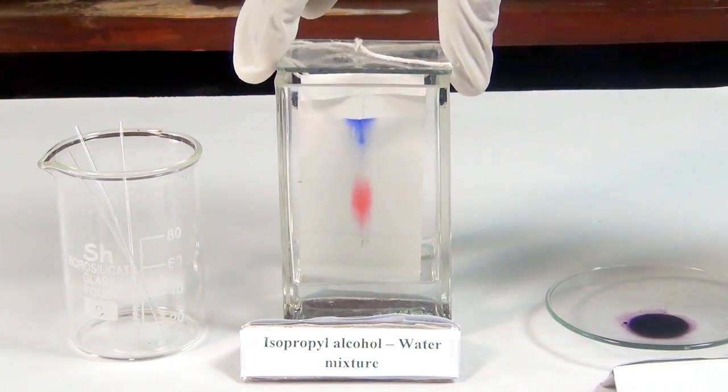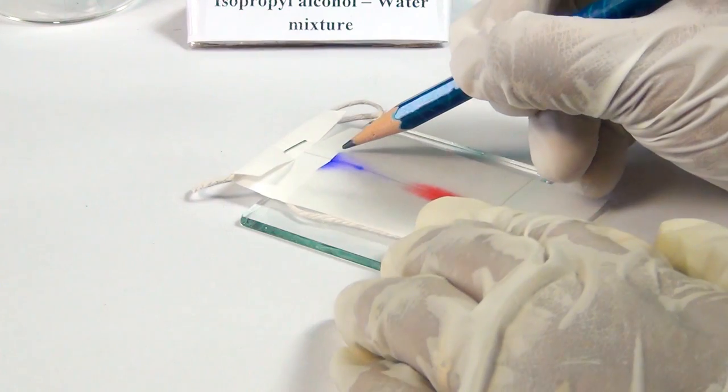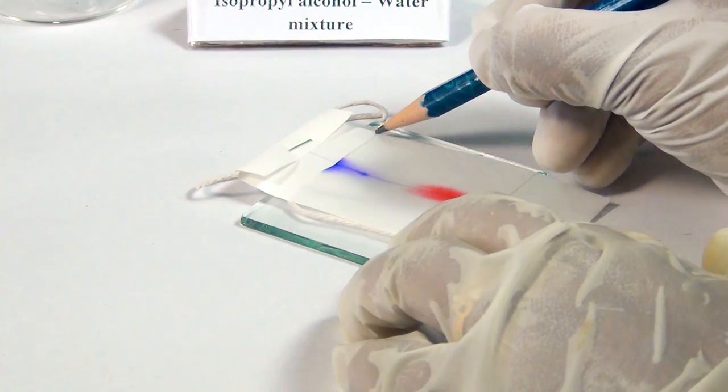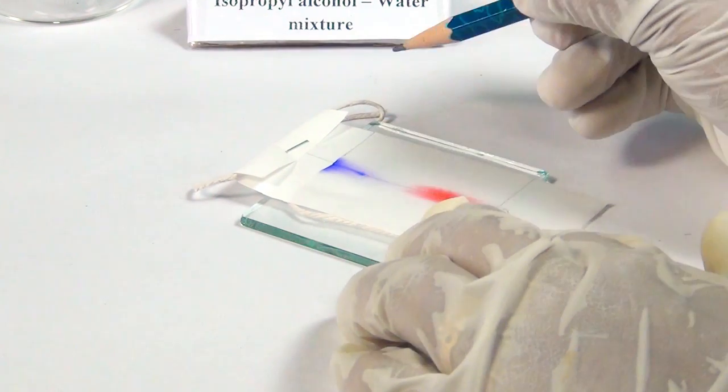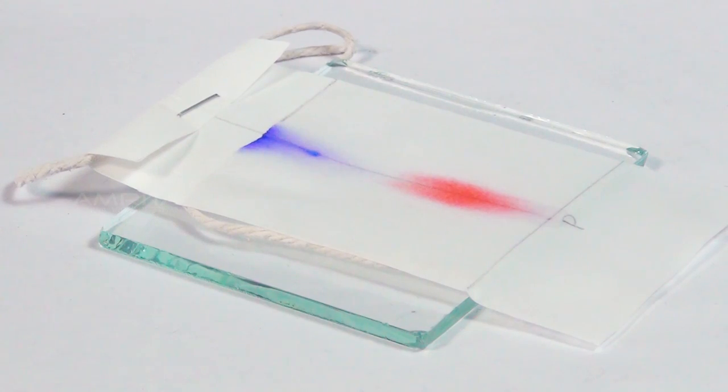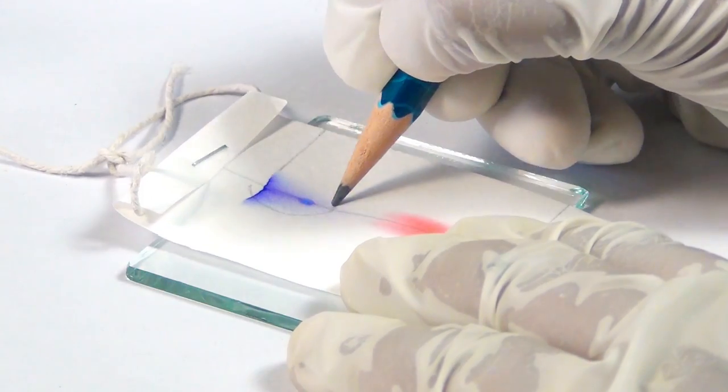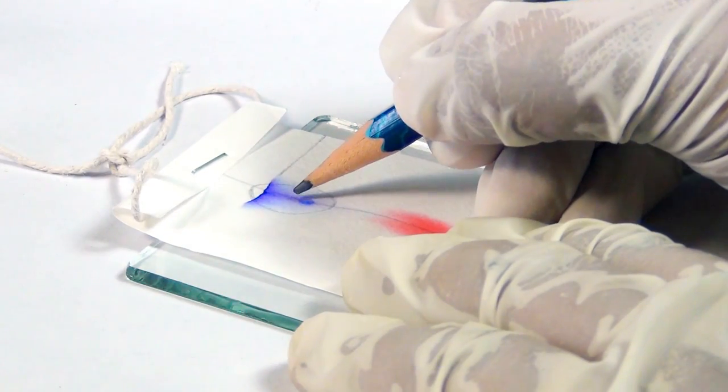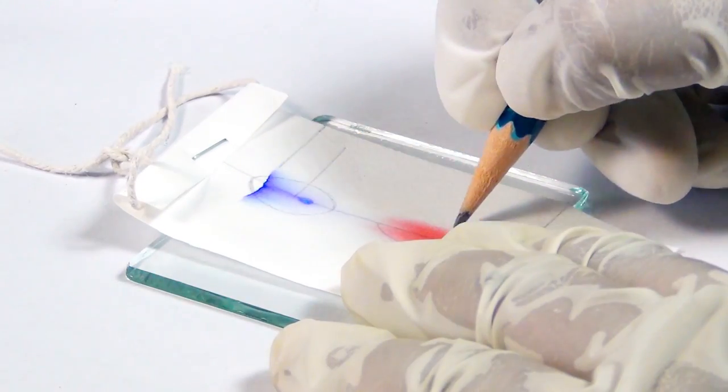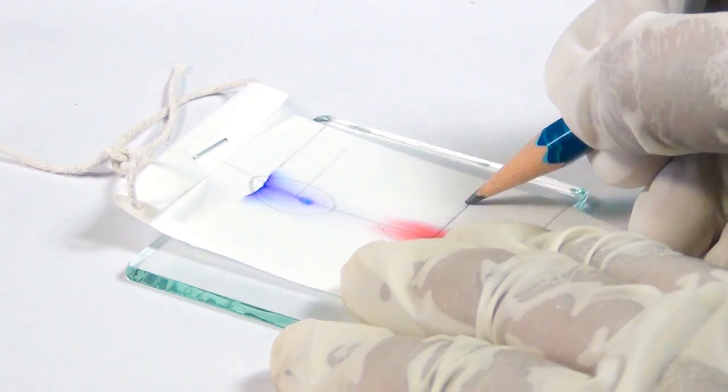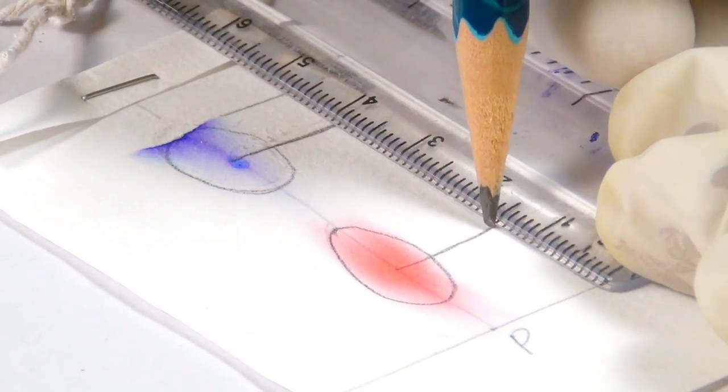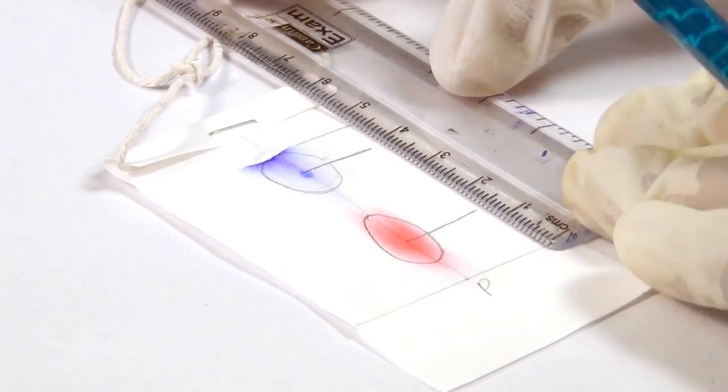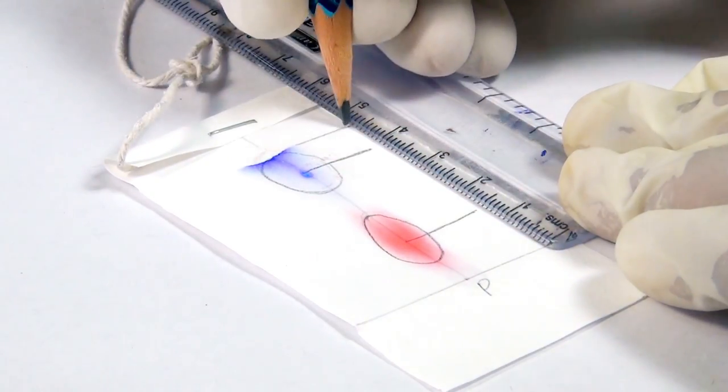Take the filter paper out of the chamber and mark the distance that the solvent has risen on the paper with a pencil. This is called the solvent front. Dry the filter paper and put pencil marks on the centre of the red and blue ink spots. Measure the distance of the two spots from the original line and the distance of the solvent from the original line.